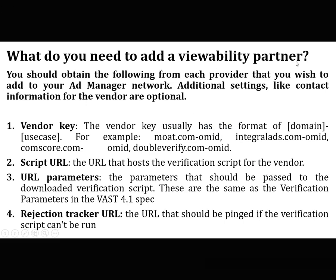What do you need to add a viewability partner? You should obtain the following from each provider you wish to add to your Google Ad Manager network. The vendor key usually has the format of a domain, for example moat.com, integralads.com, or doubleverify.com. You also need a script URL that hosts the verification script for the vendor, URL parameters that should be passed to the verification script as specified in the VAST 4.1 spec, and a rejection tracker URL that is pinged if the verification script can't be run.